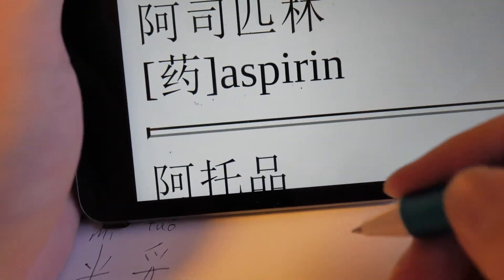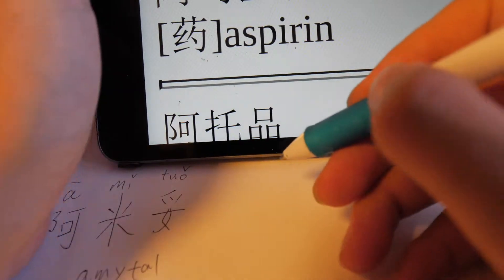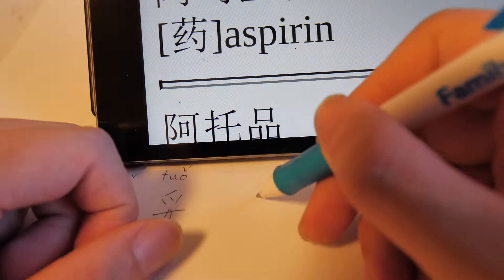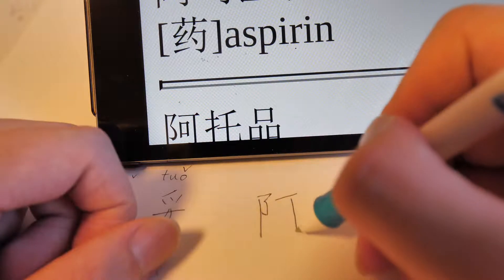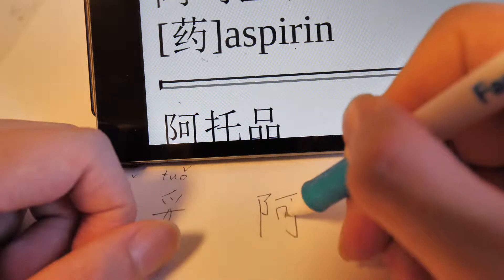And now I'll show you how to write aspirin in Chinese. 1, 2, 3, 4, 5, 6, 7.